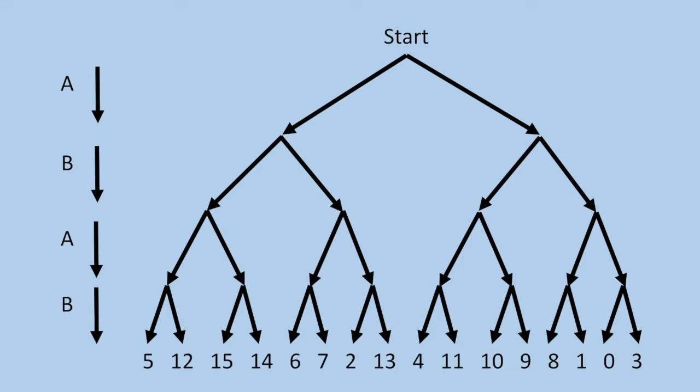So you have two players, A and B, and they start at the very top there, and they're going to end at one of those numbers at the bottom, and the way they decide which number they end at is basically by saying left or right, and they alternate who gets to decide.